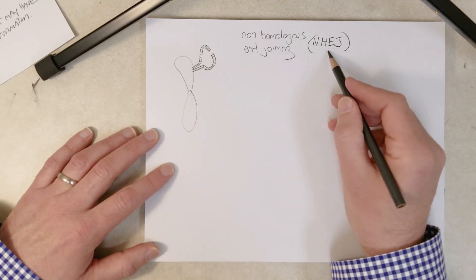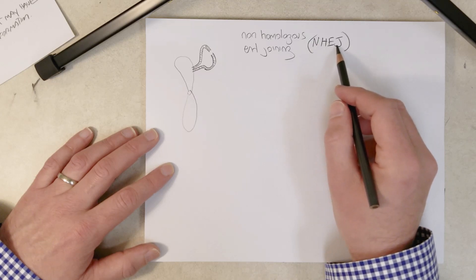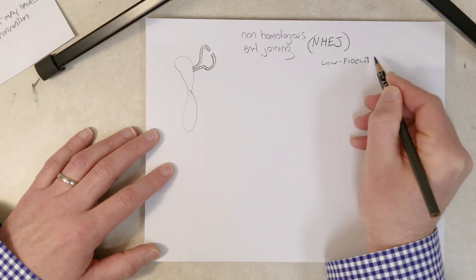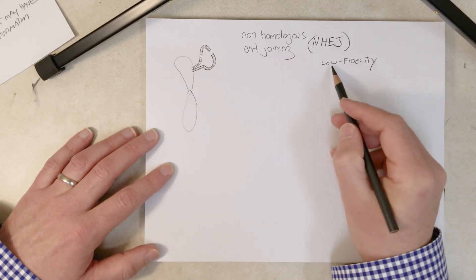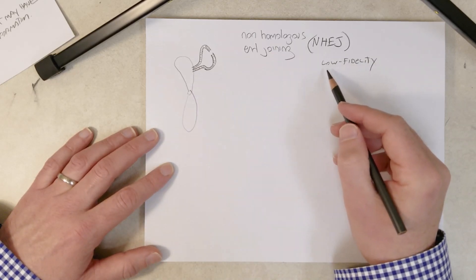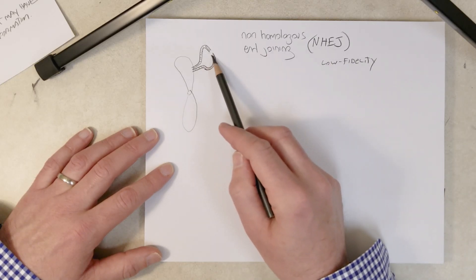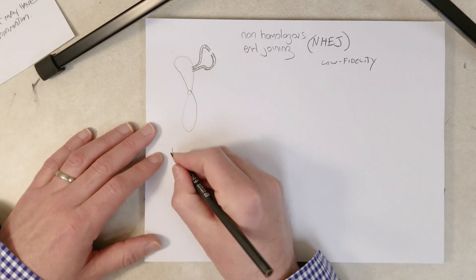And the problem with non-homologous end joining is it is low fidelity, or no fidelity. I don't even know if we say low fidelity. We can say no fidelity. So essentially it's just a process that finds the two ends and sticks them back together.